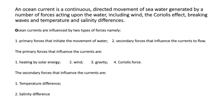Ocean currents are like a river flow in oceans; they represent a regular volume of water in a definite path and direction. Ocean currents are influenced by two types of forces: primary forces, which initiate the movement of water, and secondary forces, which influence the current to flow. Primary forces are influenced by heating from solar energy, wind, gravity, and Coriolis forces.